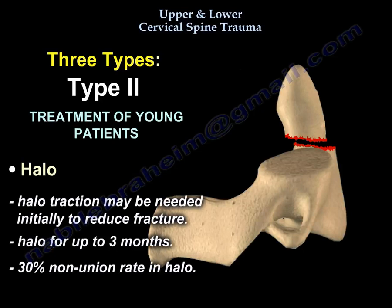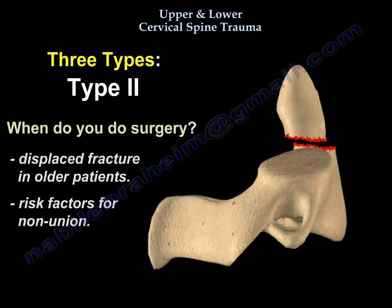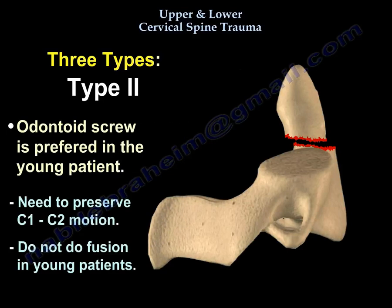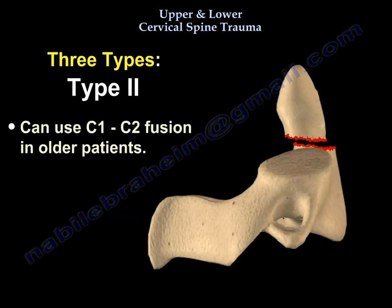How do you treat a type 2 fracture in a young patient? You will treat it by a halo. If it is displaced and there are risk factors for non-union, then you will do surgery — specifically an odontoid screw in a young patient. Why an odontoid screw? Because you want to preserve C1-C2 motion, since it controls 50% of rotation. If the patient is older, then you can use C1-C2 fusion.